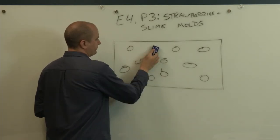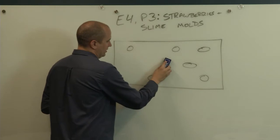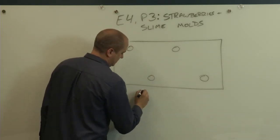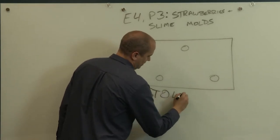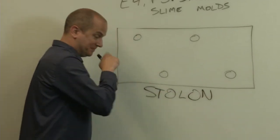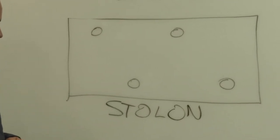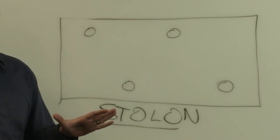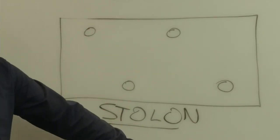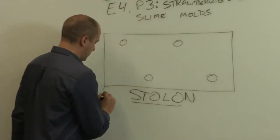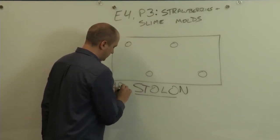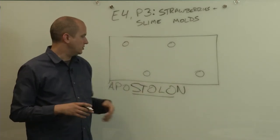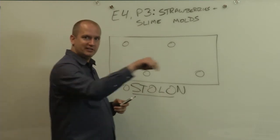A strawberry plant sends out something called a stolon. S-T-O-L-O-N. And that's actually the same root word in Greek. It has nothing to do with stealing. It's the same Greek word, the Greek root, as apostle. In Greek, an apostle is apostolon. A stolon in a strawberry plant is a runner that is sent out.